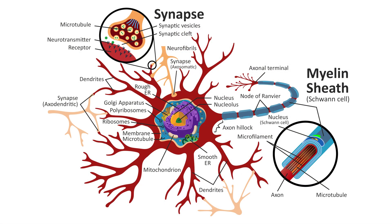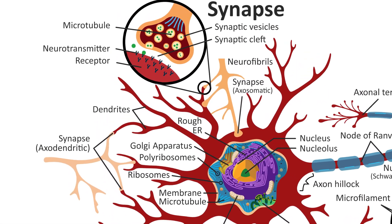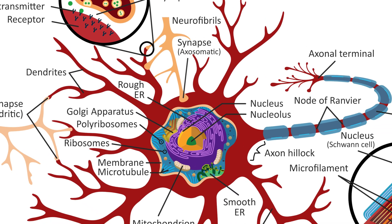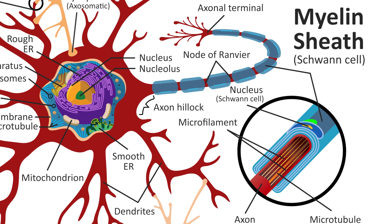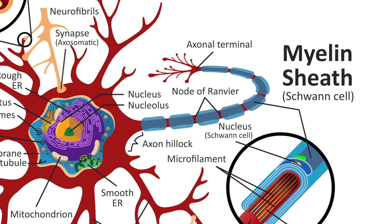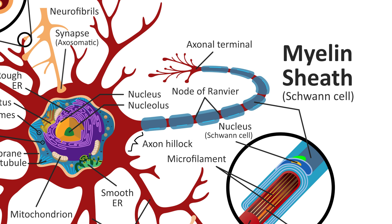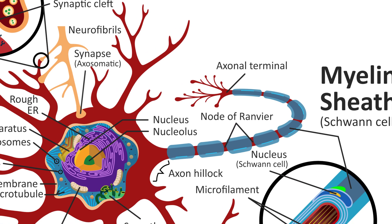Before we talk about the effects of ALS, let's talk about the parts of a neuron. The cell body controls the functions of the cell. The dendrites carry impulses to the cell body. The axon carries impulses away from the cell body. The myelin sheaths protect the axon and facilitate transmission of electrical impulses. And the axon terminals release transmitters so that impulses can pass from one neuron to another.